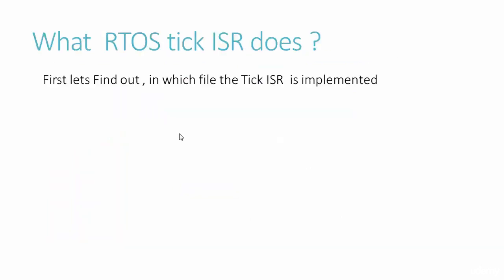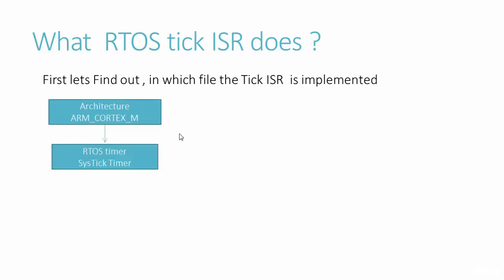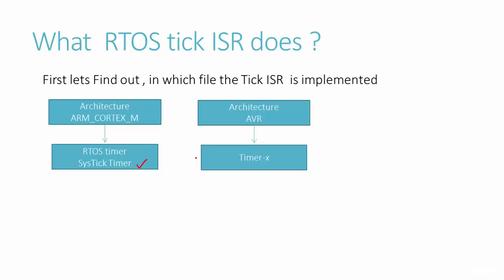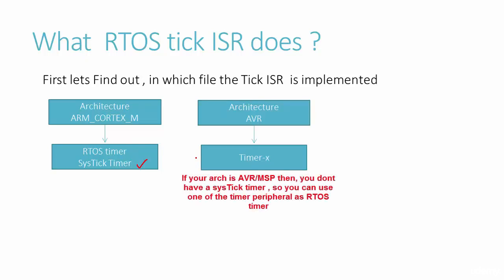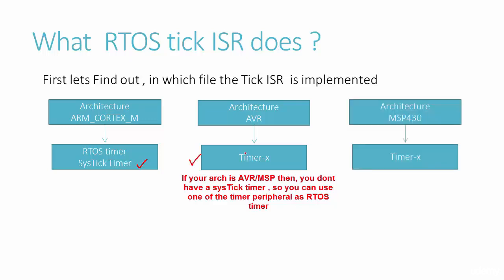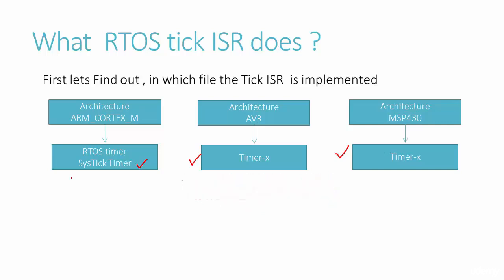In this lecture, let's explore through code what the tick ISR does. First, let's find out in which file it is implemented. If you are using a microcontroller based on a Cortex-M processor, your OS timer is the SysTick timer. If your architecture is AVR, you don't have a SysTick timer — you'd use a timer peripheral instead. Similarly, for MSP430, one of its peripherals is used as the OS timer. So the ISR code differs for ARM Cortex-M, AVR, and MSP430.